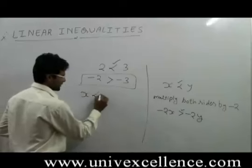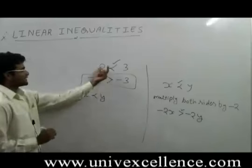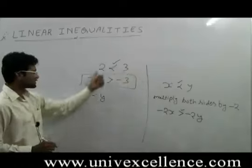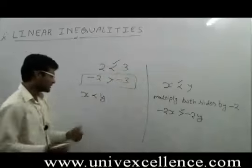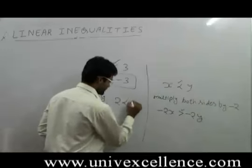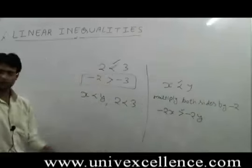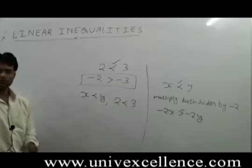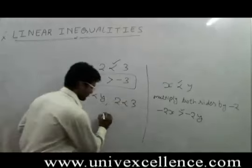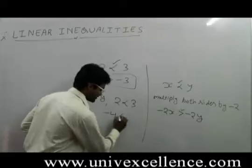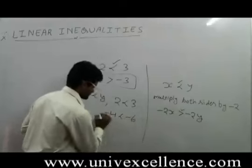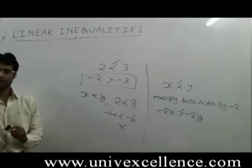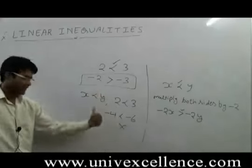Let's take this example: 2 is less than 3, so x = 2 and y = 3. We can say that x is less than y. Now multiply -2 on both sides. Is -4 less than -6? Not possible, as -6 is less than -4.